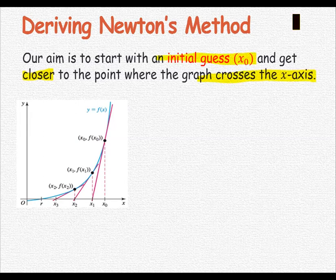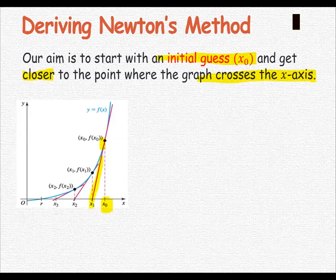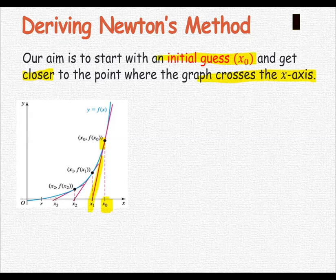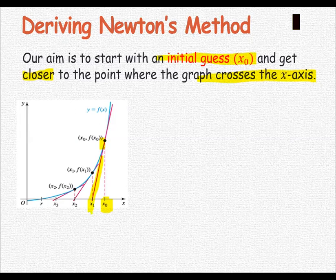In the graph, you can see x₀ is the initial point. Use the ordered pair (x₀, f(x₀)) and the slope of the curve, m = f'(x₀), to form the tangent line. This tangent line crosses the x-axis at x₁, so x₁ is the x-intercept.